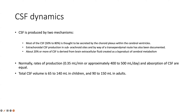CSF is produced by two mechanisms. Most is secreted by the choroid plexus within the cerebral ventricles; extrachoroidal production also occurs at subarachnoid sites and via a transependymal route. About 20% of CSF is derived from extracellular fluid in the brain as a byproduct of cerebral metabolism. Normal production rate is approximately 0.35 ml per minute or about 500 ml per day, with absorption equal to production so net volume remains constant. Total CSF volume is 65–140 ml in children and 90–150 ml in adults.